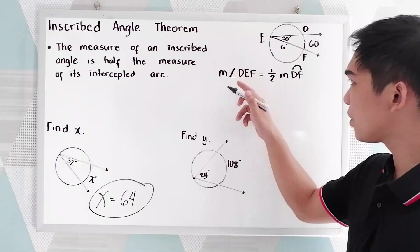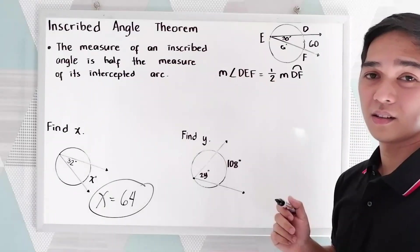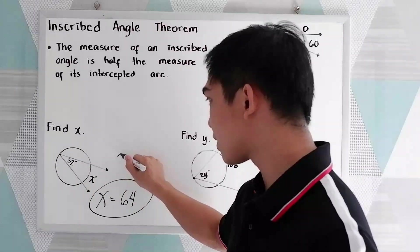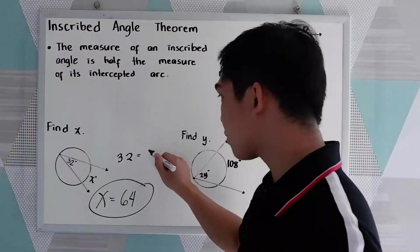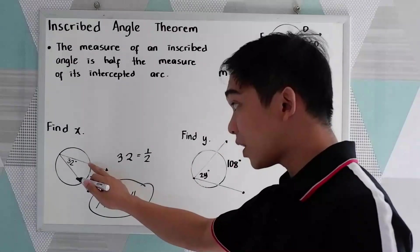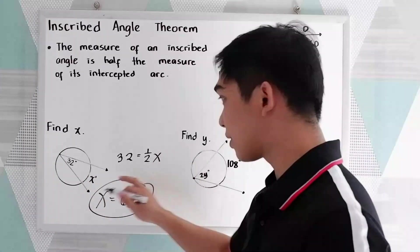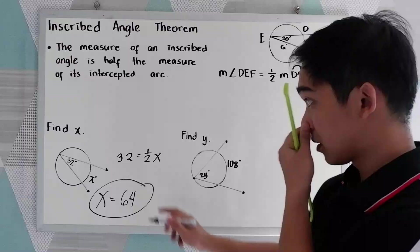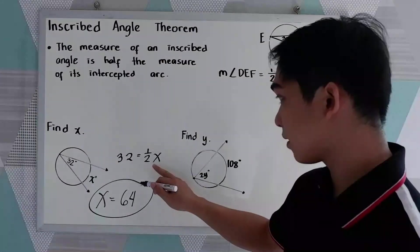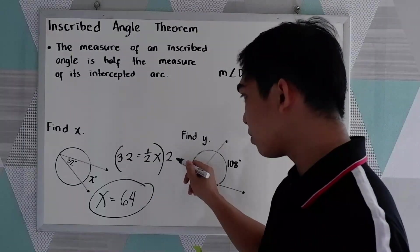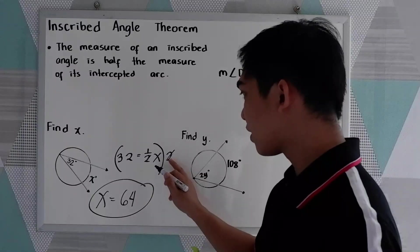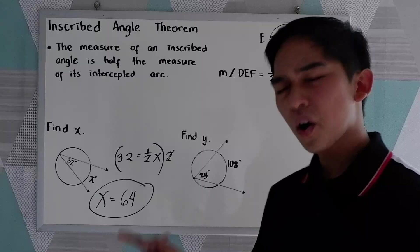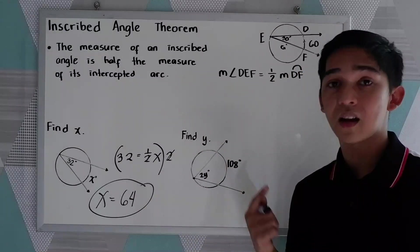Let us use the theorem. The measure of the angle, which is 32, is equal to one-half of the intercepted arc. So, our intercepted arc is X. Now, to find X, we can multiply by 2. So, this will be cancelled out. 32 times 2, which is 64. Or, you can use mental calculation.